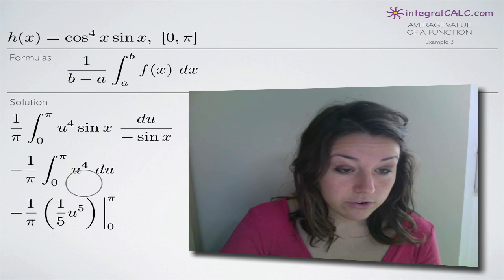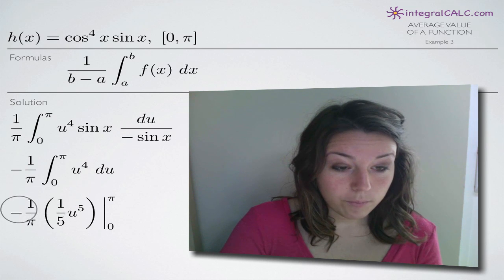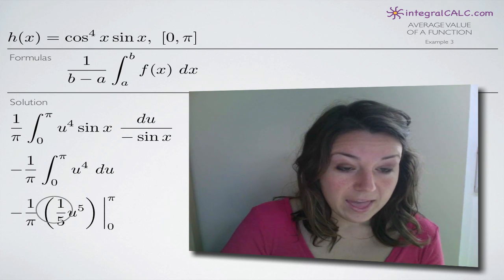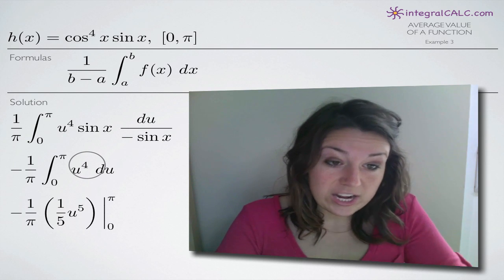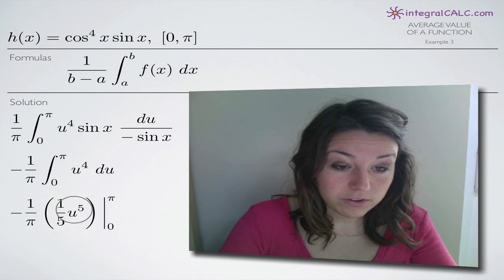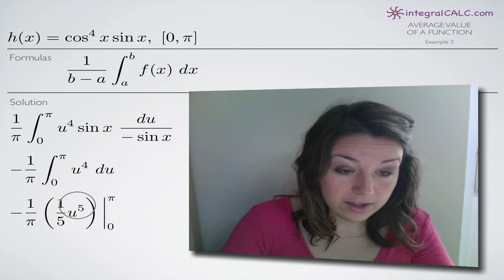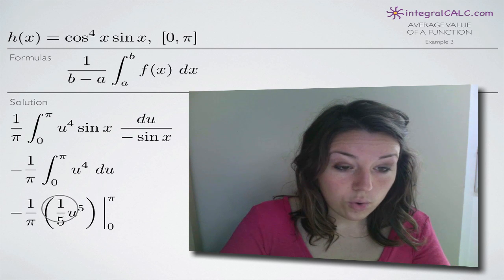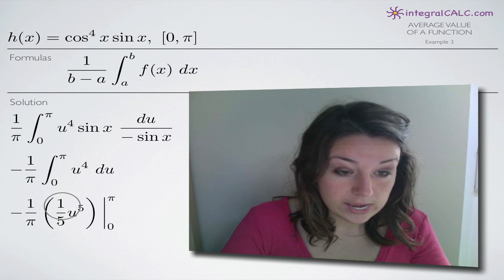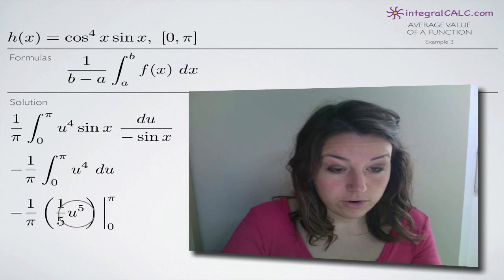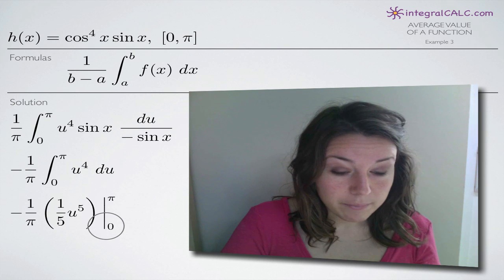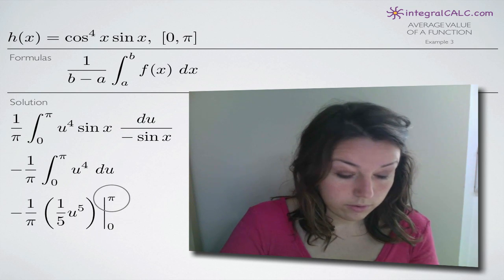When we integrate, we have this negative one over pi out in front. As always with integration, we add one to the exponent — four plus one gives us five. Then we divide the coefficient, which is the implied one, by the new exponent five, giving us a one-fifth coefficient in front of u to the fifth, evaluated from zero to pi.